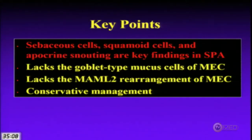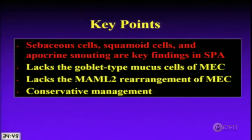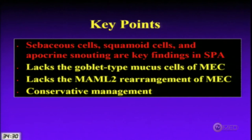Key take-home points: the combination of sebaceous cells, squamoid cells, and apocrine snouting are features expected in sclerosing polycystic adenosis. The FNA will likely be categorized as neoplasm, uncertain malignant potential, generally low-grade with malignancy risk less than 35%. SPA aspirates lack goblet-type mucinous cells of mucoepidermoid carcinoma, lack MAML2 rearrangement, and management should be conservative.